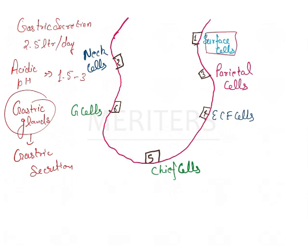First, we have the surface cells. These surface cells are generally bicarbonate-rich cells and they secrete mucus. They produce mucus, and the HCO3⁻ acts as a buffer, performing acid neutralization.